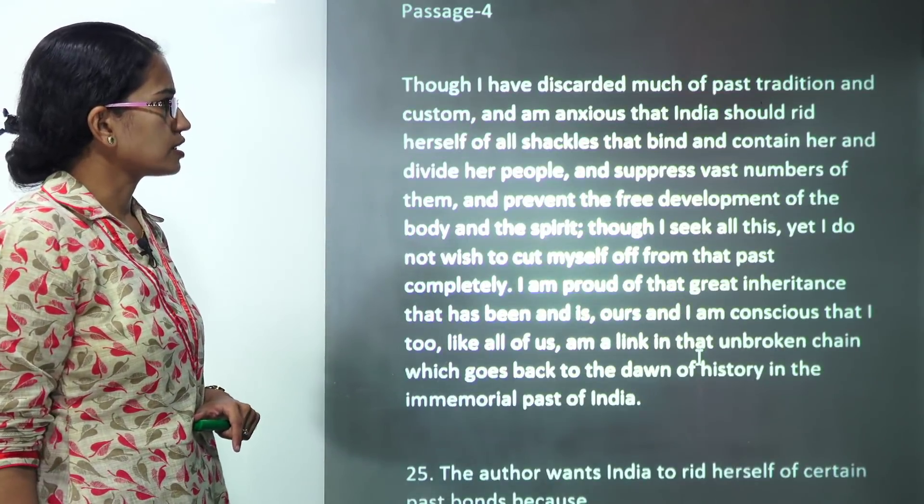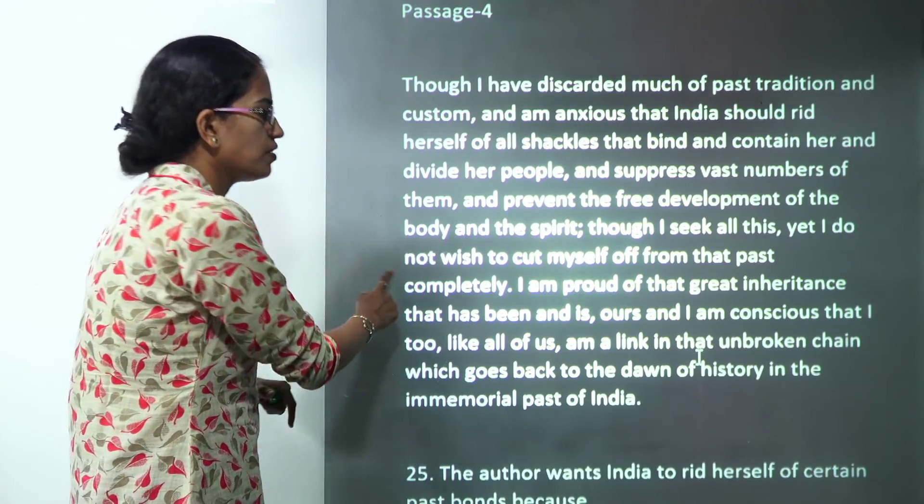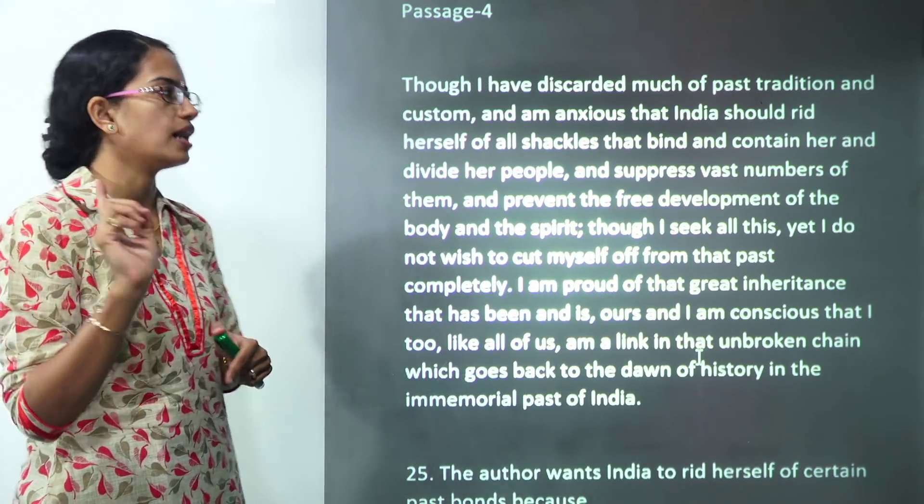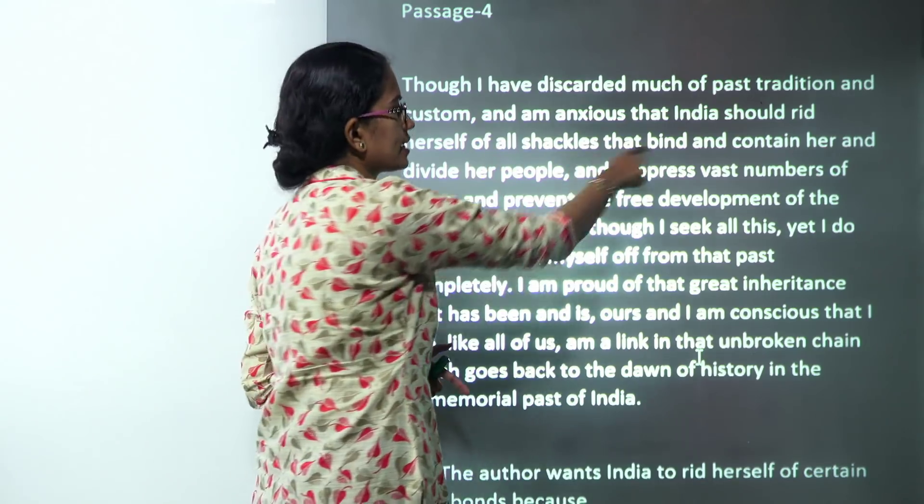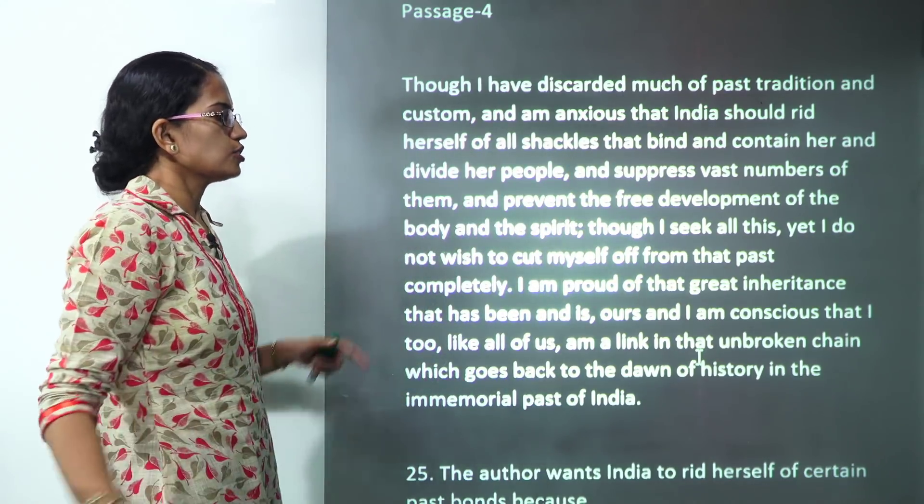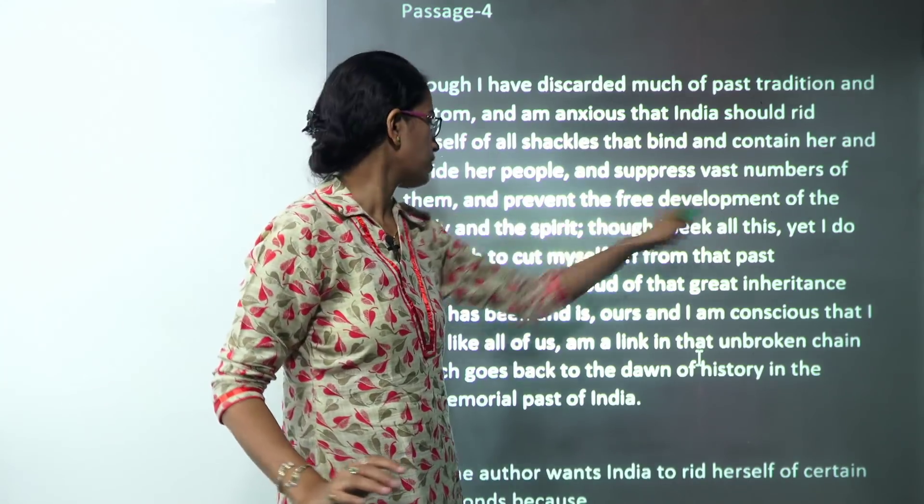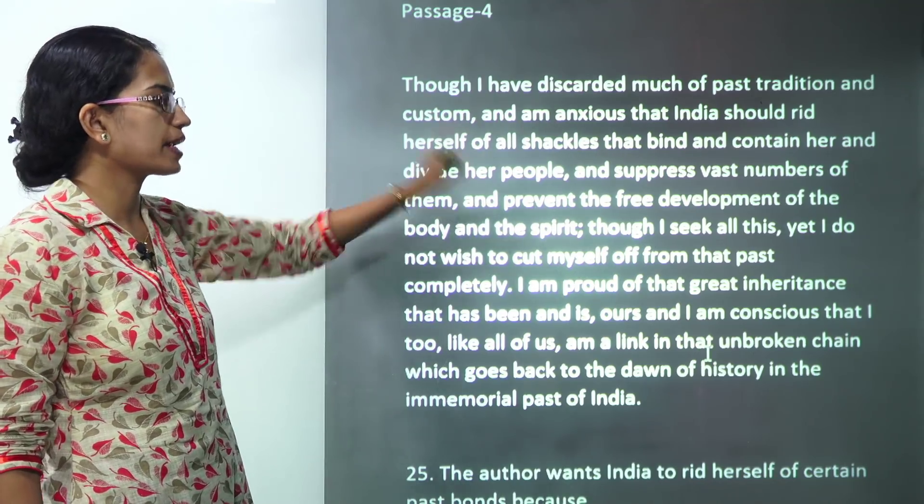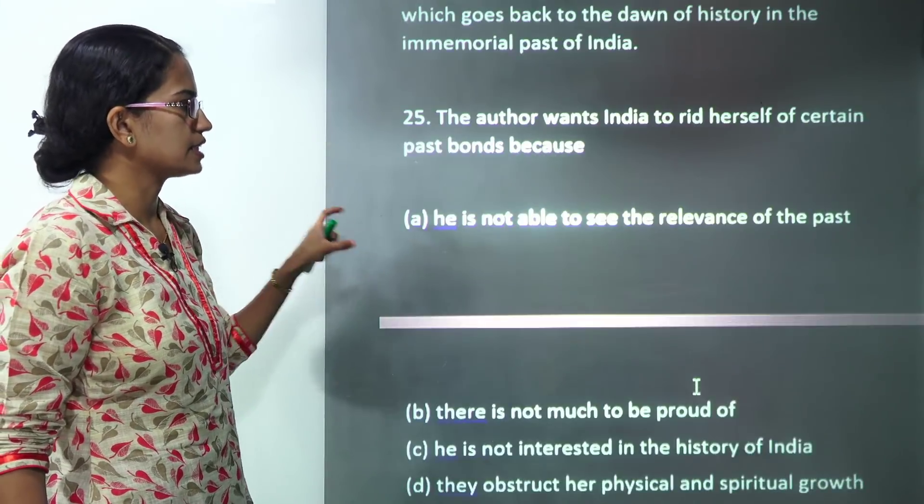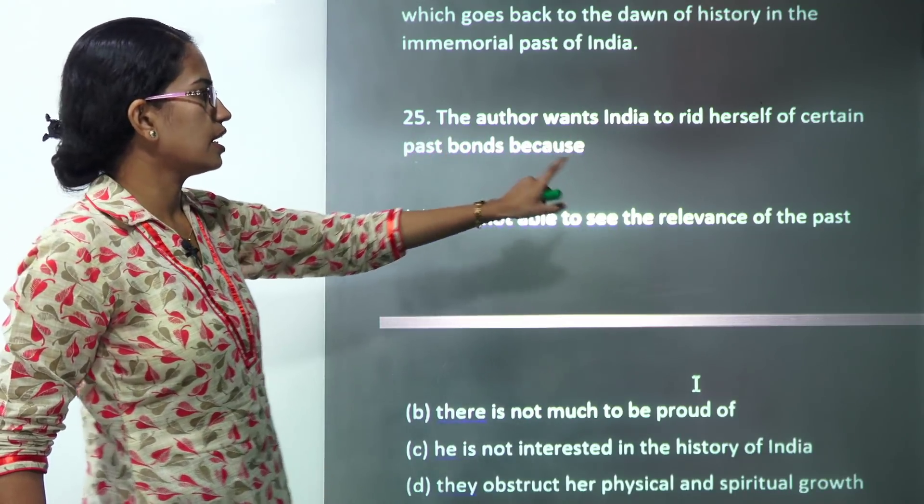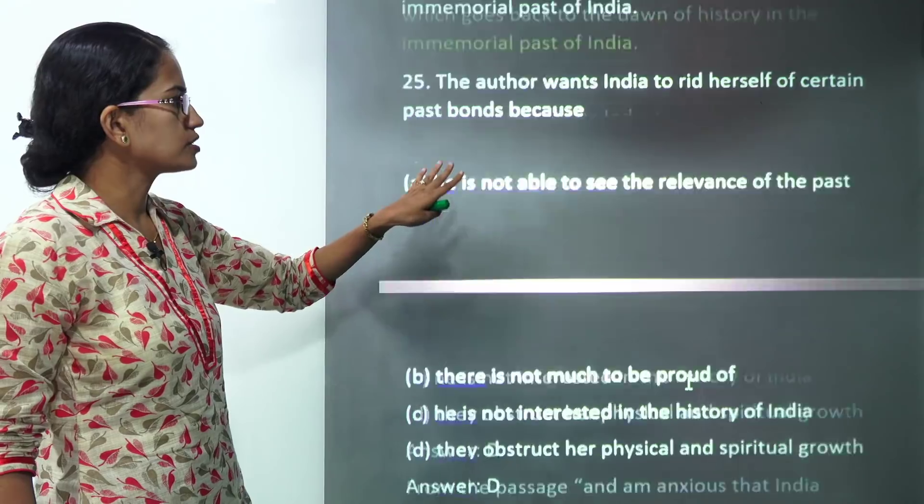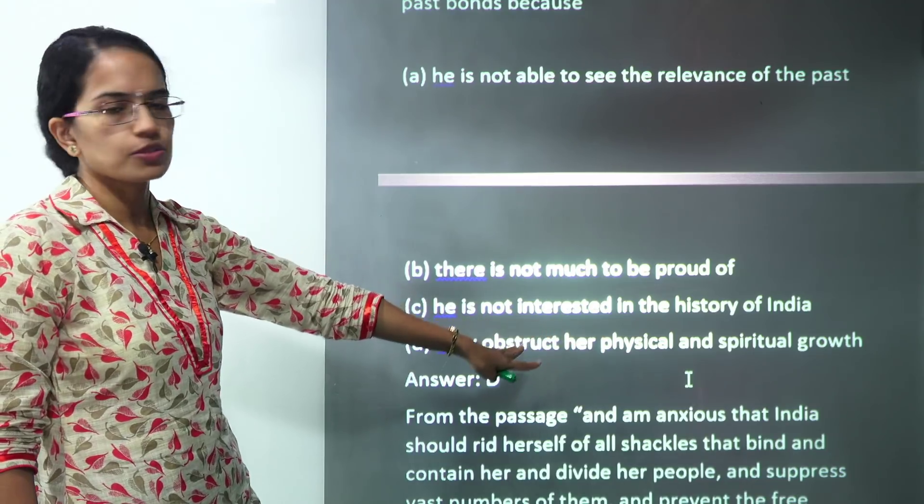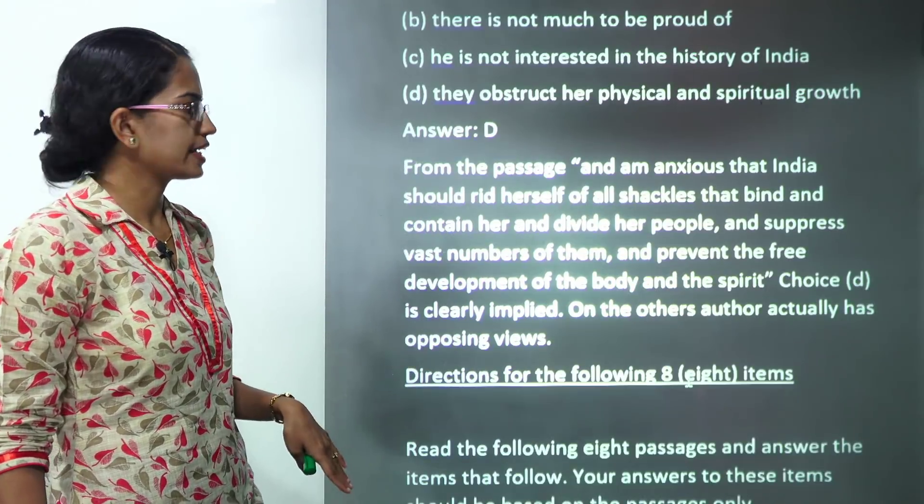The next passage talks about the past culture. However it says that I am proud of the great inheritance. So the person is proud of his past but he wants to get rid of the shackles that bind or divide the people and prevent the free development of body and spirit. So that's the key idea. He is proud of his culture but he wants to liberate from those kind of restrictions that are present. So the author wants to get rid of certain bonds, past bonds because of the physical and spiritual growth that is being obstructed. So D becomes the correct answer here.